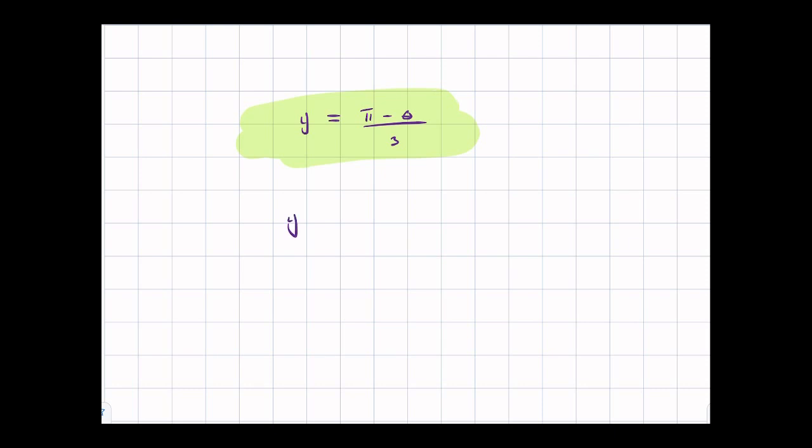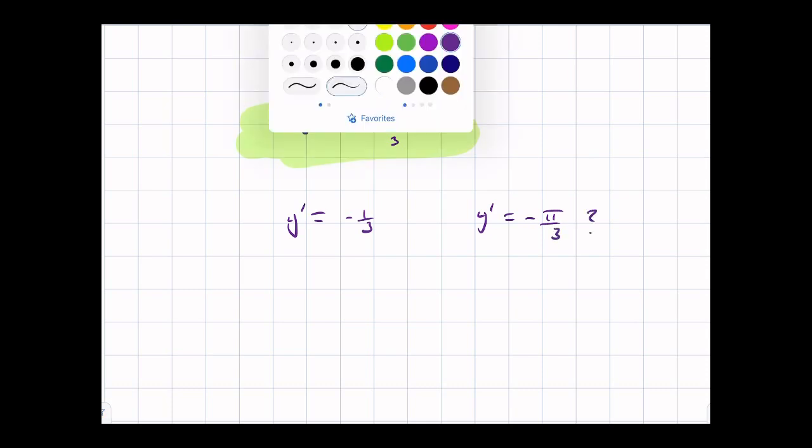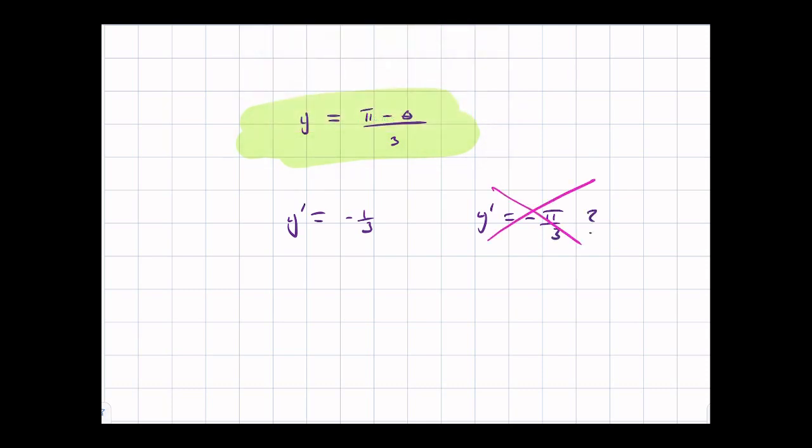And so the question was, why is y prime going to be negative 1 over 3, and not negative pi over 3? Shouldn't y prime be negative pi over 3? And the answer is no. Of course, this is not the derivative, but the question is why.